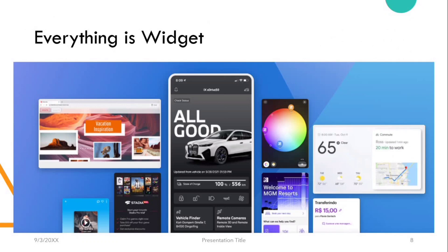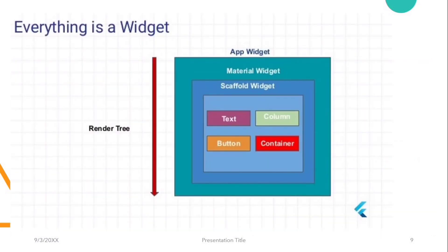Everything is a widget in Flutter. A widget is whatever UI element — whether visible or invisible — in your Flutter application. For example, imagine a screen containing a text, column, button, and container: each of these is a widget. These basic widgets are wrapped inside a Scaffold, which is also a widget. And again, that Scaffold is wrapped inside a MaterialApp, which is also a widget. So everything is a widget in Flutter.